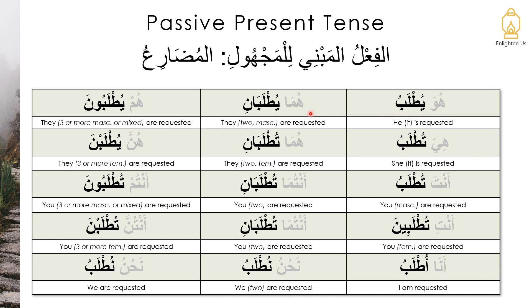Huwa utlubu, humaa utlubani, hum utlubuna, hiya tutlubu, humaa tutlubani, hunna utlubna, enta utlubu, antumaa tutlubani, entum tutlabuna.